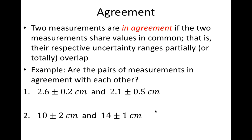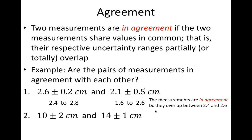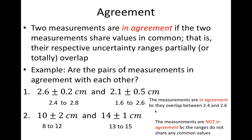If we're comparing two measurements, we say they are in agreement if the two measurements share any common values or if their ranges overlap. For example, in number one, the first measurement has a range of 2.4 to 2.8, and the second has a range of 1.6 up to 2.6. The ranges overlap between 2.4 and 2.6, so the two measurements are in agreement. In number two, the first range is 8 to 12 and the second is 13 to 15 — these ranges do not overlap, so these two measurements are not in agreement. If two measurements are not in agreement, we refer to them as discrepant.